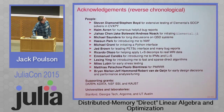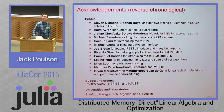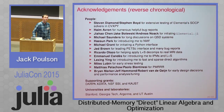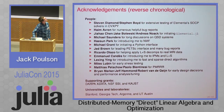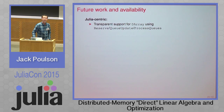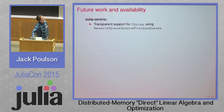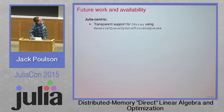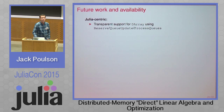For future work: something I had hoped would be functioning today — but there was a problem with Julia's shared library loading yesterday that cost me a few hours — is transparent support for DArray for this functionality. That should be coming very, very soon, and all it requires is looping over the local indices assigned to each worker.